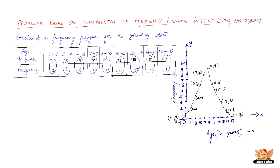So here we have the frequency polygon without using a histogram. In a nutshell, all we have to do is find the midpoints of the class intervals, make coordinate pairs using the midpoint and the frequency, plot those points on the graph, and join them with line segments. And there we have a frequency polygon without using a histogram.